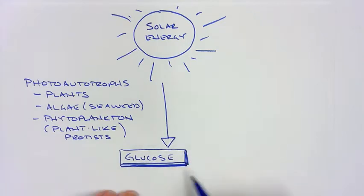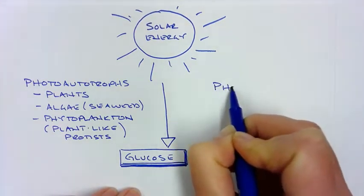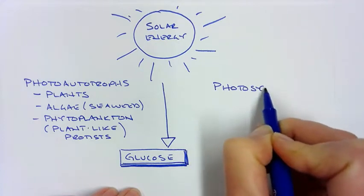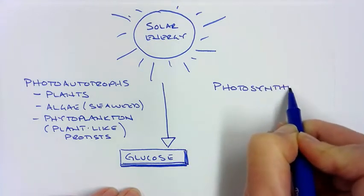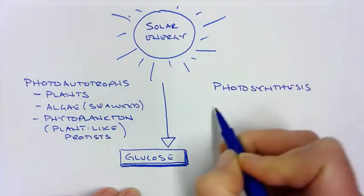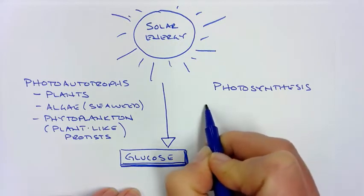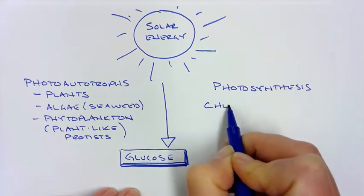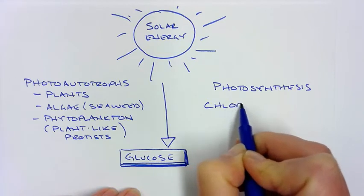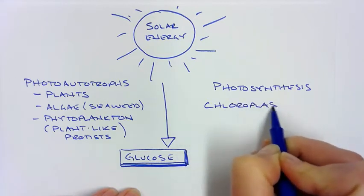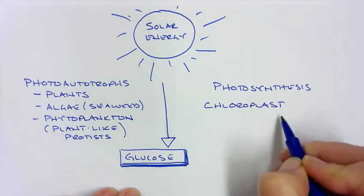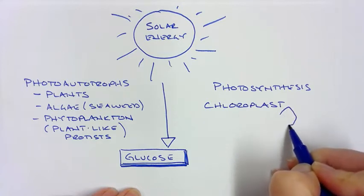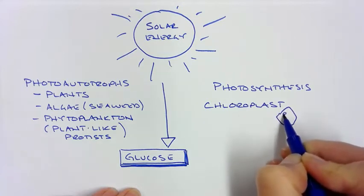They do this through a process called photosynthesis, which takes place in the chloroplast. Chloroplasts kind of look like these funky shaped M&Ms with grana.